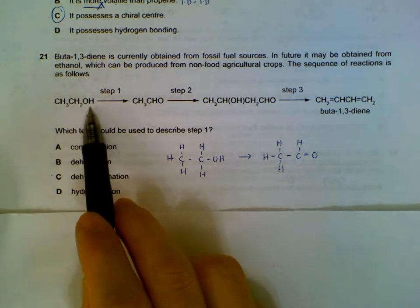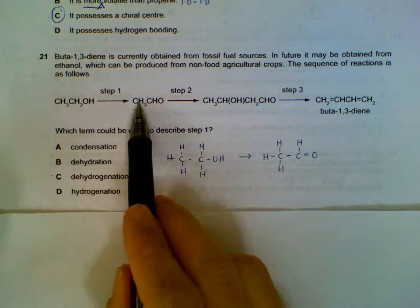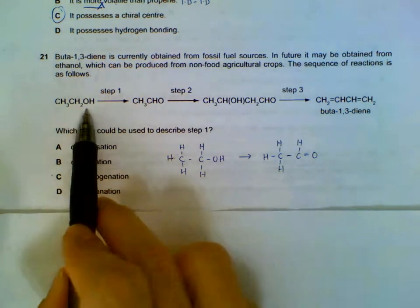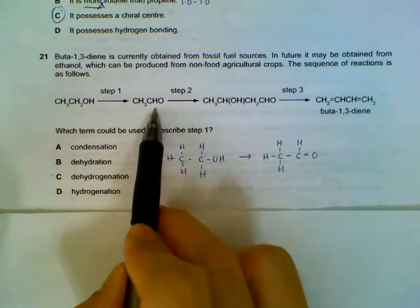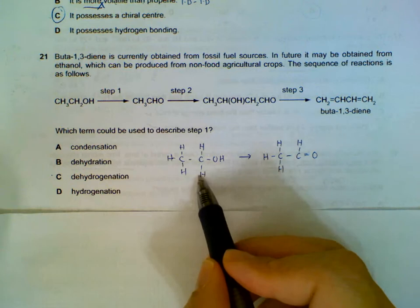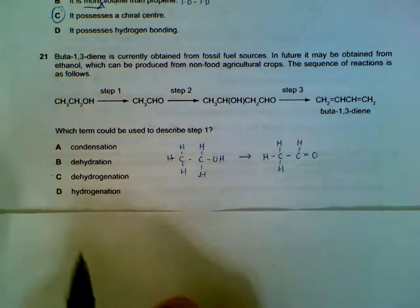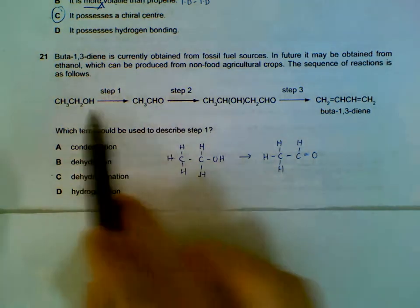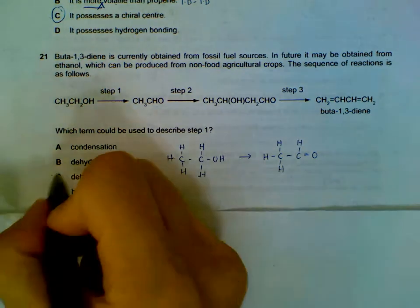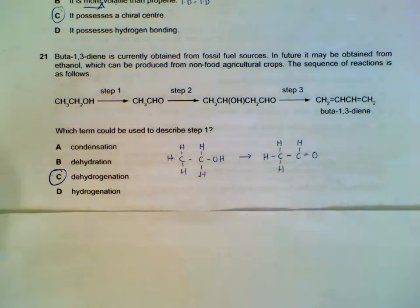Question 21: In step one, the alcohol becomes an aldehyde by removal of hydrogen. This can be described as oxidation, or alternatively as dehydrogenation — removal of hydrogen.